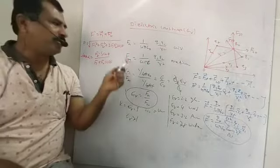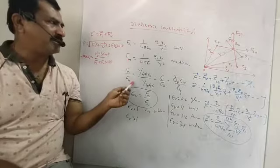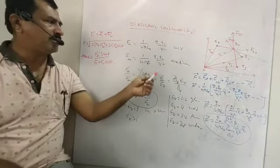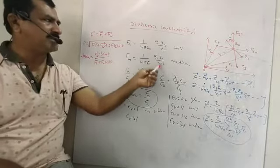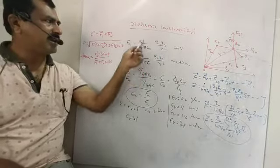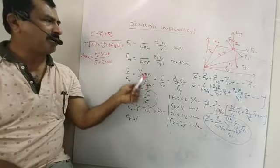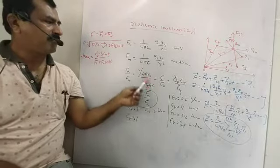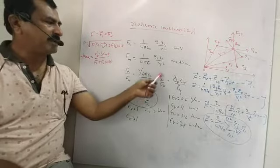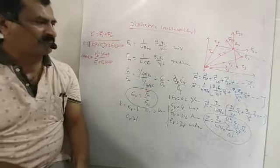Dividing Fa by Fm: Q1, Q2 cancel, r square cancels, leaving 1 by 4 pi epsilon divided by 1 by 4 pi epsilon. The 4 pi terms cancel, giving epsilon divided by epsilon of the medium.